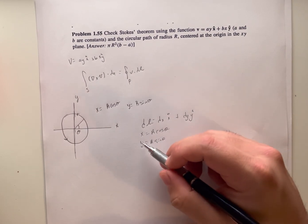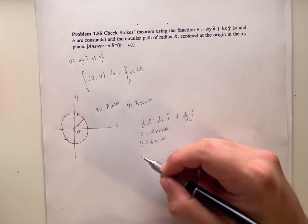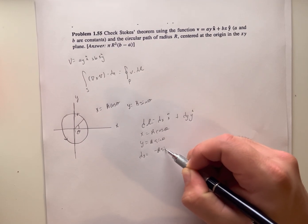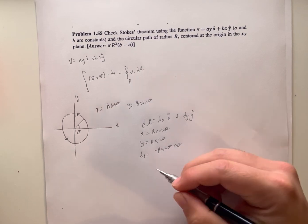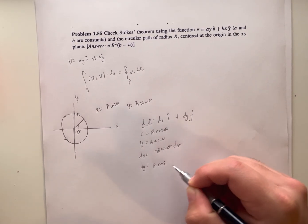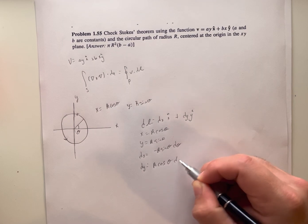Differentiating these with respect to x and y, we get dx equals negative R*sin(theta)*d-theta and dy equals R*cos(theta)*d-theta.